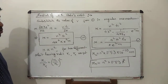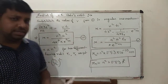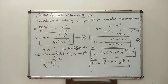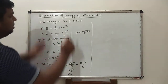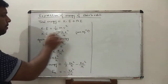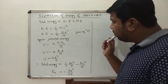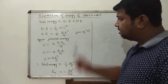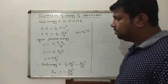Next we discuss the energy of the Bohr orbit. Total energy is the sum of kinetic energy and potential energy. The kinetic energy is ½MV². From equation number 1, MV² = KE²/R, so kinetic energy equals ½KE²/R.